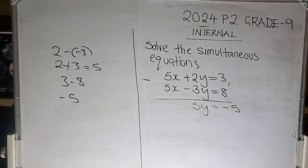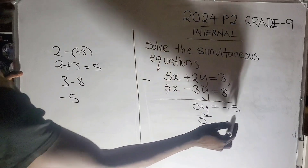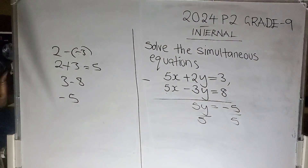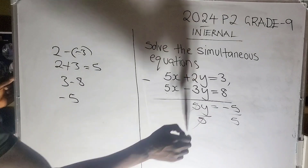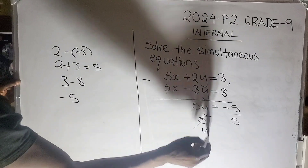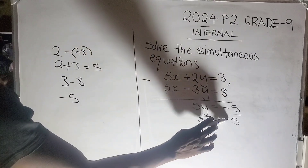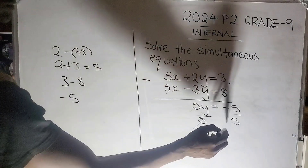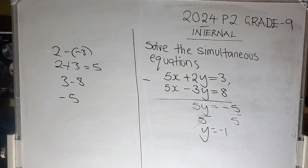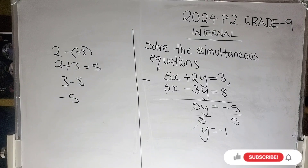We have negative 5. Then we divide both sides by 5, and 5 will cancel. Then y is equal to — positive divided by negative is negative — 5 into 5 is 1. So the value of y is negative 1. Now let's find the value of x.